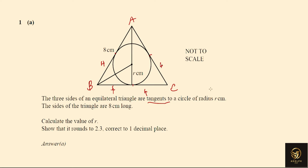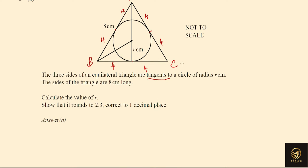We have to calculate the value of r and show that it rounds to 2.3 correct to one decimal place. We know the angle between the radius and tangent is 90 degrees. The interior angle of an equilateral triangle is 60 degrees, and the angle bisector divides it exactly, so this angle is 30 degrees.